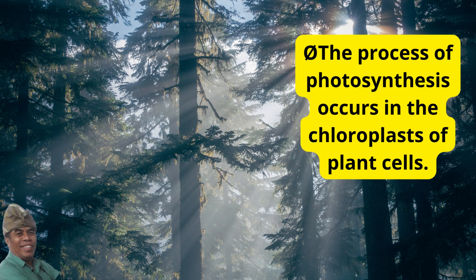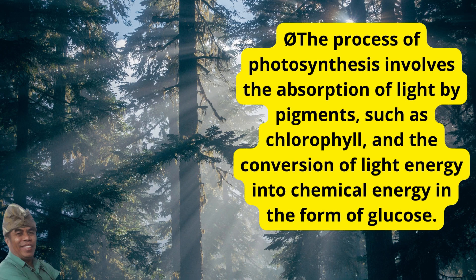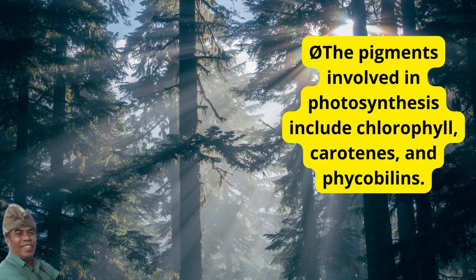The process of photosynthesis occurs in the chloroplasts of plant cells and involves the absorption of light by pigments such as chlorophyll, and the conversion of light energy into chemical energy in the form of glucose. The pigments involved in photosynthesis include chlorophyll, carotenes, and phycobylans.